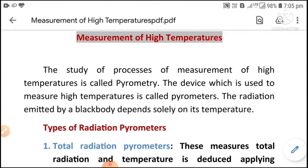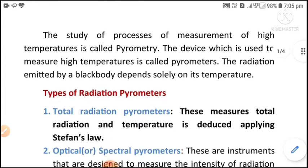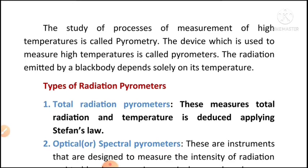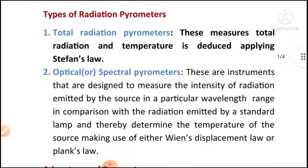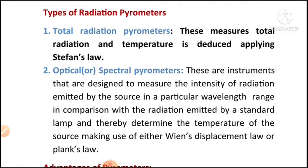The radiation emitted by a black body depends only on its temperature. Now let us see the types of radiation pyrometers. Number one is total radiation pyrometers. These measure total radiation and temperature is deduced by applying Stefan's law, which we have already discussed.